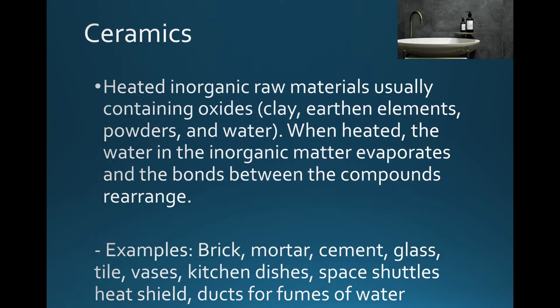Next we have ceramics, which we use in construction very often, but it has other uses too. It's made by taking inorganic raw materials that contain oxides — clay and earthen elements — and mixing that with powders and water, then heating it. The water and organic matter evaporate, causing a chemical reaction that rearranges the bonds between the compounds, and we have a new material called ceramics.